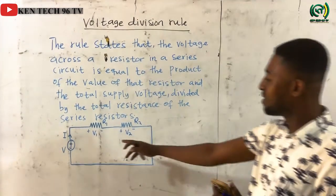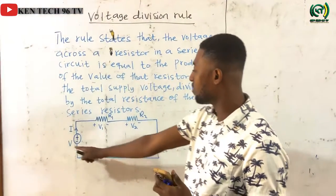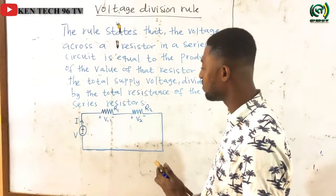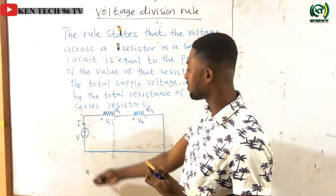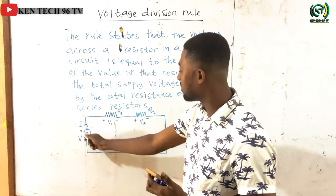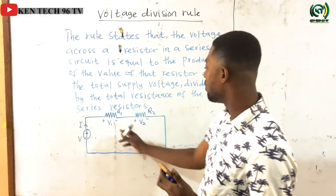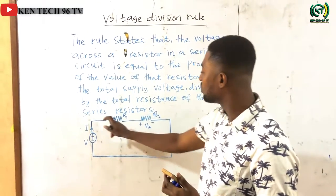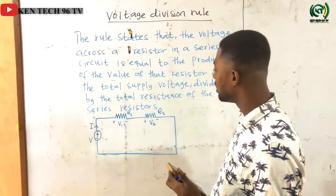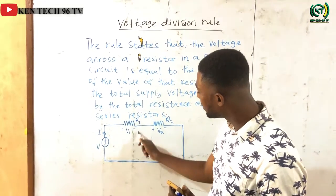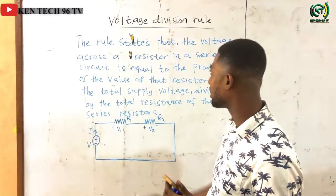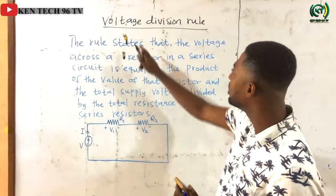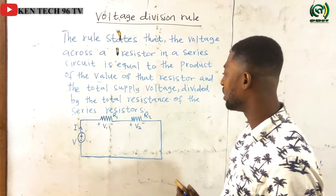So if I have this simple circuit and this is my voltage source — whenever you have a voltage source in a circuit, its basic function is to drive current. When this voltage source drives a current, resistors R1 and R2 are connected in series, so the same current will flow through them sequentially. If I want to calculate the voltage drop across resistor R1, since R1 and R2 are connected in series, I can simply use the voltage divider rule.